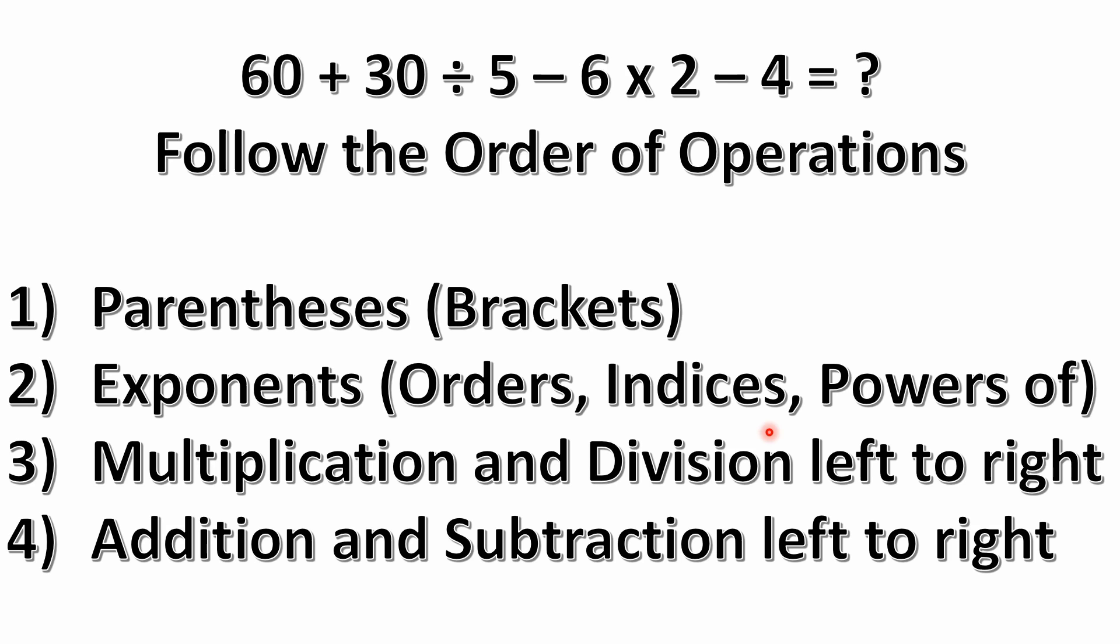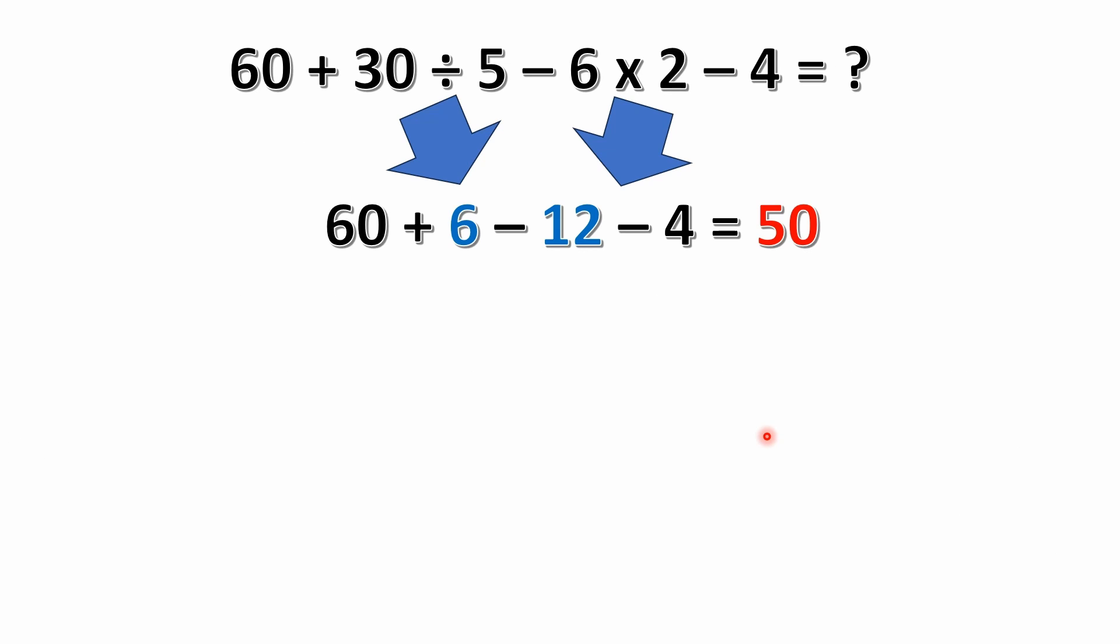Once we've resolved our multiplication and division left to right, we would solve our addition and subtraction left to right. So again, starting out here, we would start with our 30 divided by 5.